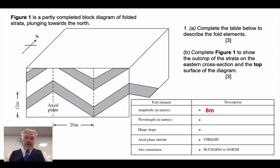For the wavelength, we can see there that we have a distance from an anticlinal hinge to a synclinal hinge as 20 metres. But for wavelength, we always measure between similar hinges. So from an anticline to an anticline or syncline to syncline. As a result, the wavelength must be 40 metres. Finally, the hinge shape is angular.